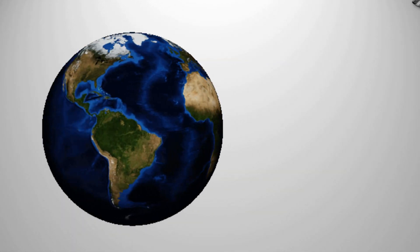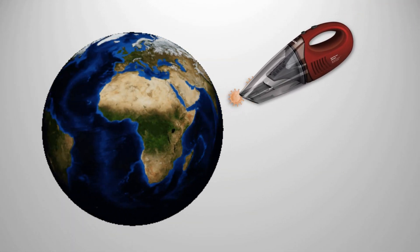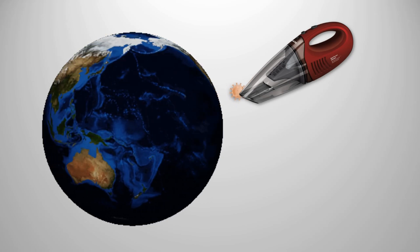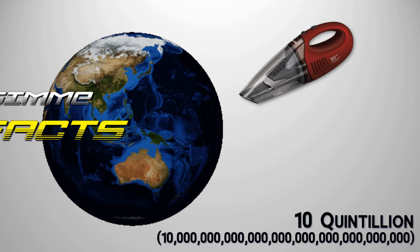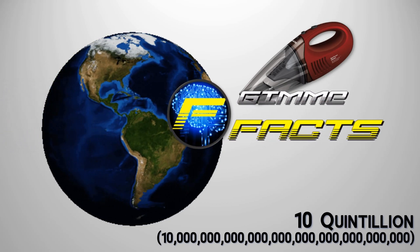Viruses are also the most abundant living entities on Earth. An estimate says that there are 10 quintillion viruses on planet Earth at any given moment. That's 30 zeros that make a quintillion.